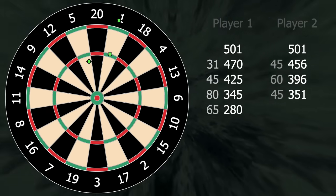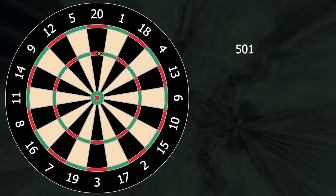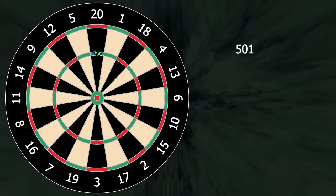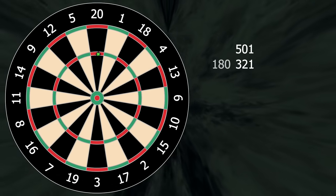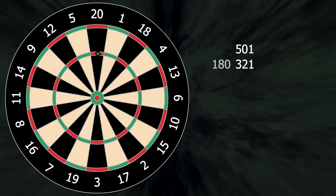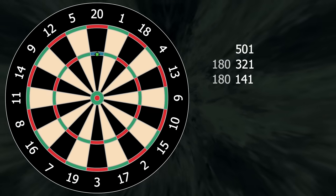The smallest number of darts it's possible to finish a leg with is 9. And the most common way this is done is treble 20, treble 20, treble 20 on the first visit, 3 treble 20s again on the second. And that leaves you with 141.